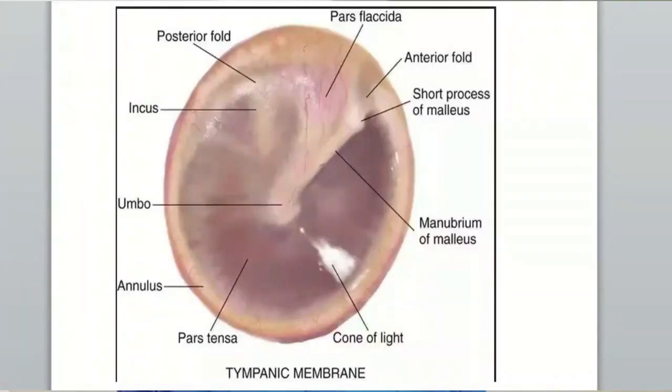Hello and welcome. Today I've got the tympanic membrane and I will discuss different types of perforation of it and their clinical significance. First we have to know how the tympanic membrane looks like when we see it from the external auditory canal. Most of the tympanic membrane is formed by pars tensa — it is a taut membrane and it is peripherally condensed to form a fibrocartilaginous ring called the tympanic annulus. There is another part called pars flaccida; it is the upper part above the anterior and posterior malleal fold.